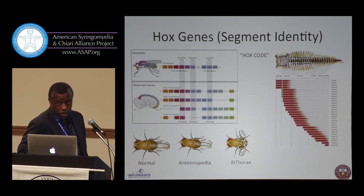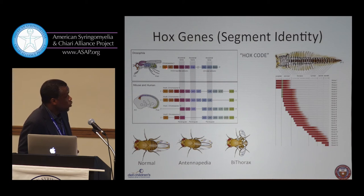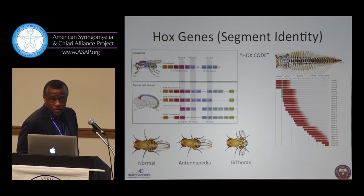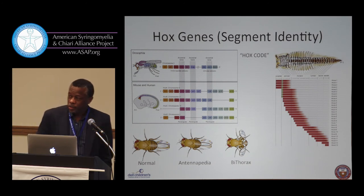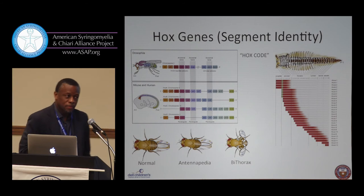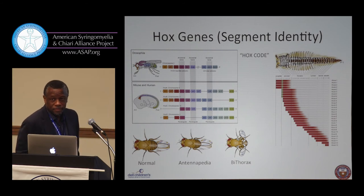These Hox genes are 96% identical in structure between a fruit fly and a human. We have actually shared the same genes, which is why we all have the same basic body plan. He coined the term 'homeobox' because within this gene he found a very specific region that helped lead to regulation. These are called transcription factors — they actually control other genes to function — and they were very consistent across all animal species.